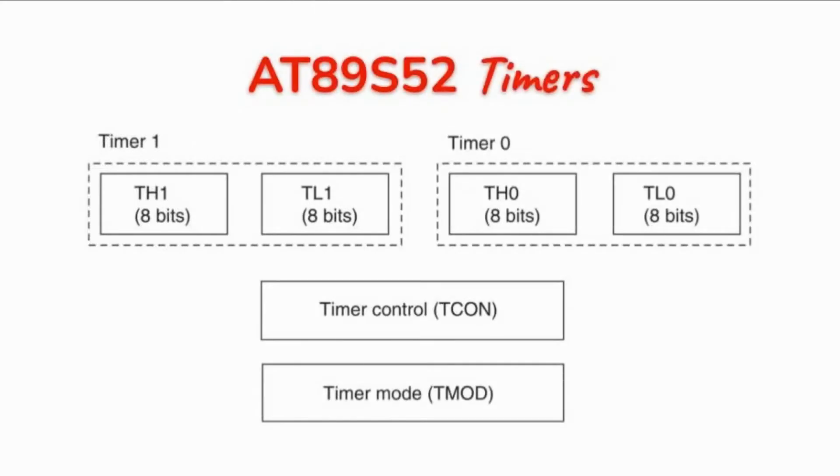Timer 0 and timer 1 have two 8-bit registers: the timer low register and the timer high register. These two registers are used to store the 16-bit initial count value, where the low byte of the count is stored in one register and the high byte is stored in the other register.